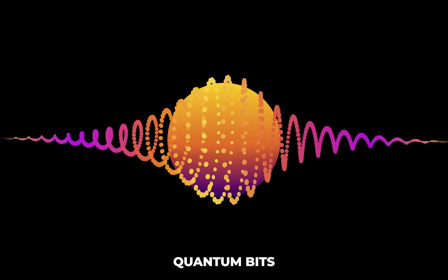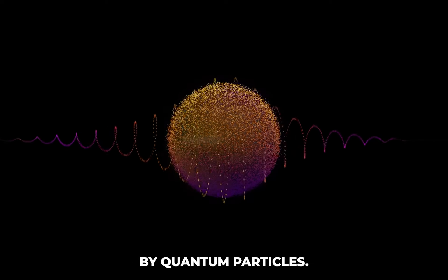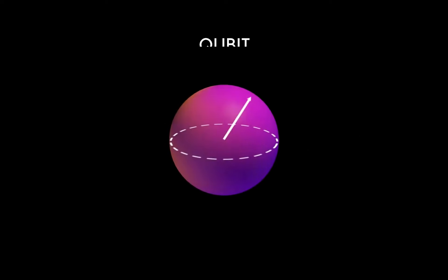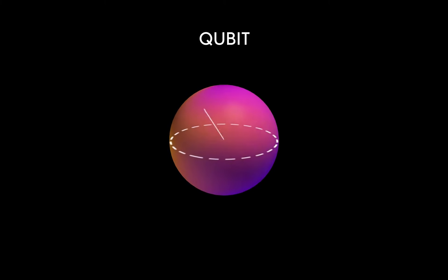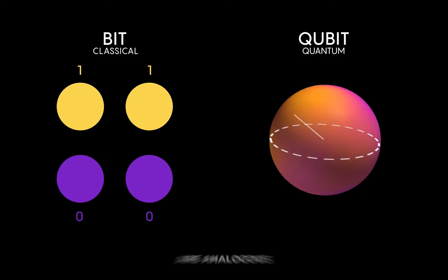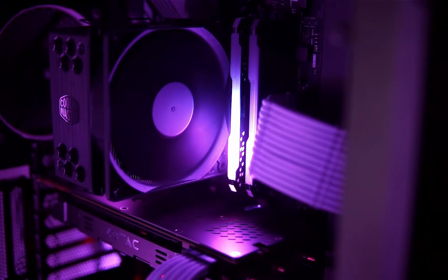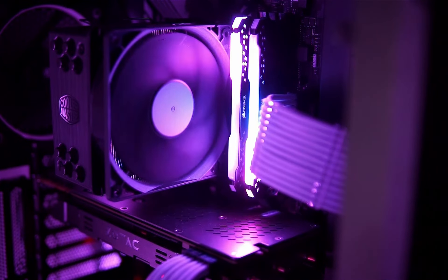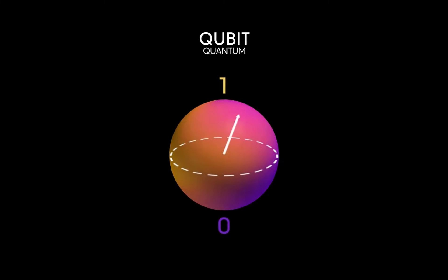Quantum bits, or qubits, are represented by quantum particles. The manipulation of qubits by control devices is at the core of a quantum computer's processing power. Qubits in quantum computers are analogous to bits in classical computers. At its core, a classical machine's processor does all its work by manipulating bits.